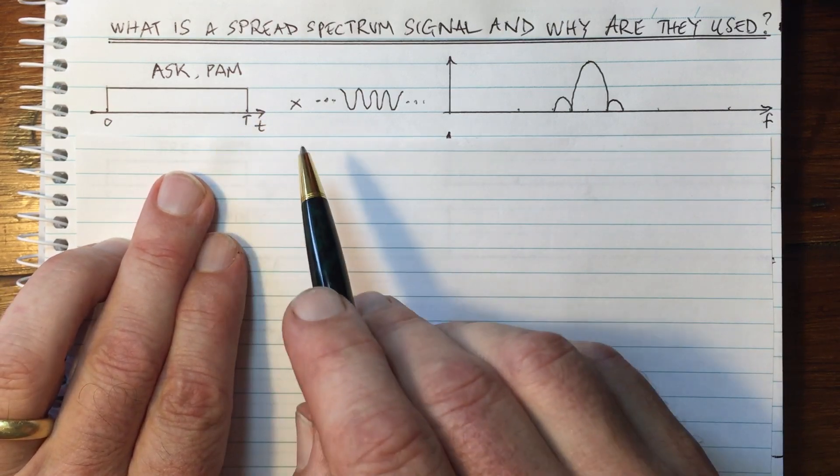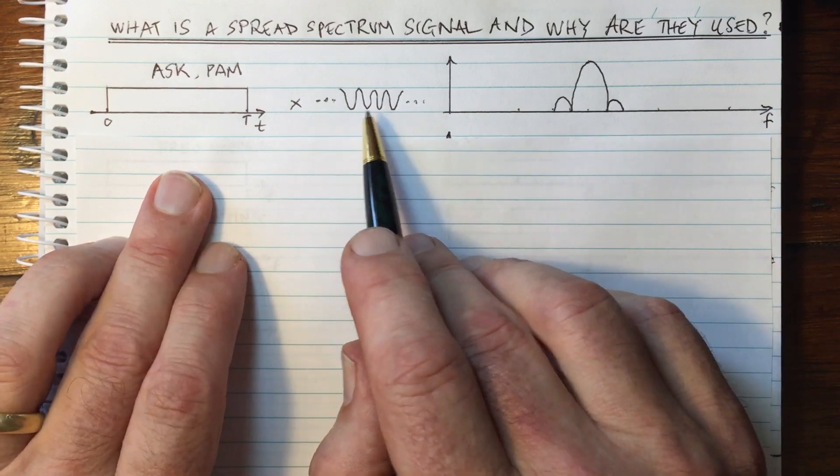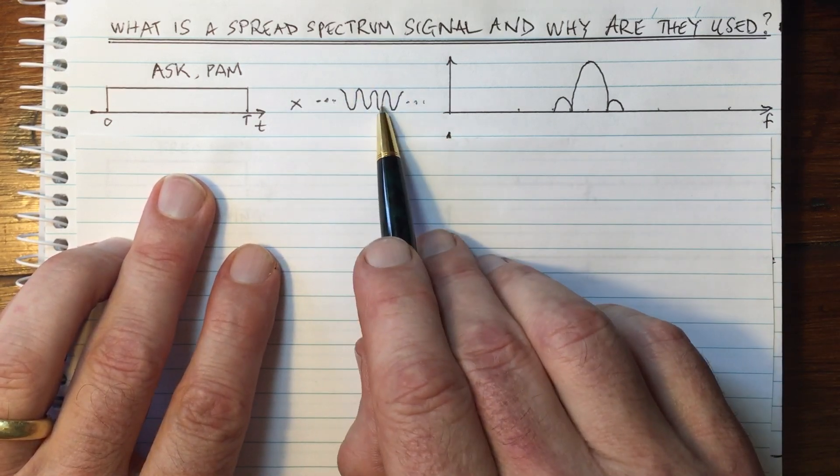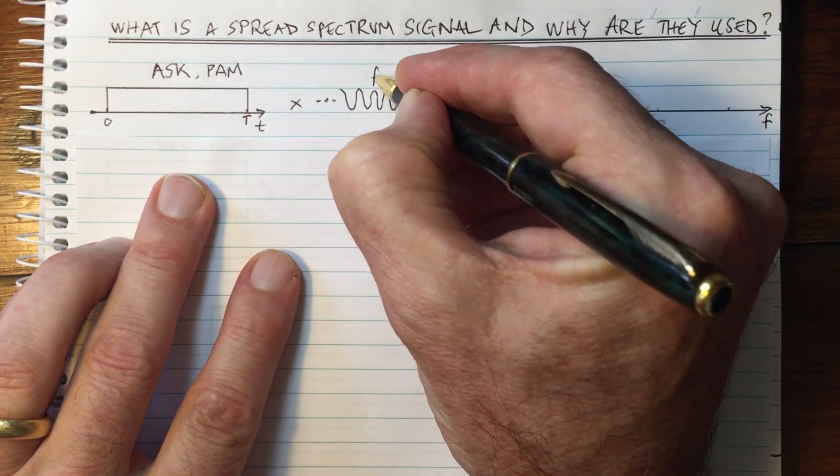And when we send over a wireless channel, we are going to be using a multiplication by a carrier. In this case here, I'm going to call it F1.